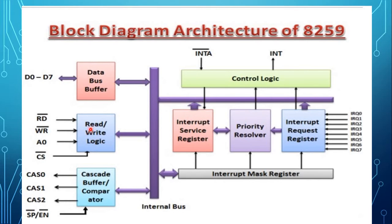The second block is the read/write logic. This logic block has four signals: read signal, write signal, A0, and chip select signal. The read and write signals act as control signals used to control all internal read or write operations. It contains the initialization command word ICW register and operational command word OCW register, which specify various control formats for device operation.